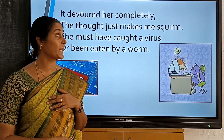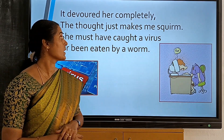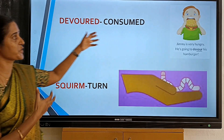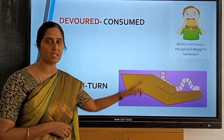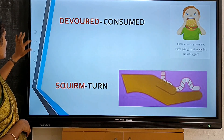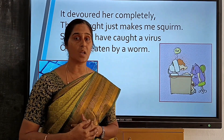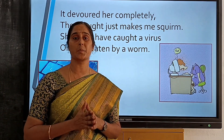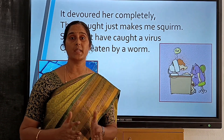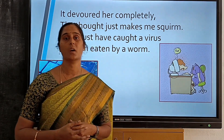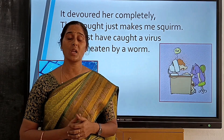It devoured her completely. The thought just makes me squirm. She must have caught a virus or been eaten by a worm. Let's see the meaning of 'devour' — it means consuming, gulping without chewing. And 'squirm' means to twist and turn; you can see the movement of worms — that movement is called squirming. The poet is telling us that her grandma has been consumed completely by the computer, and this thought has made the poet restless. She is thinking her grandma might have been attacked by a computer virus — a virus is a code that copies itself and harms all the data in the computer.